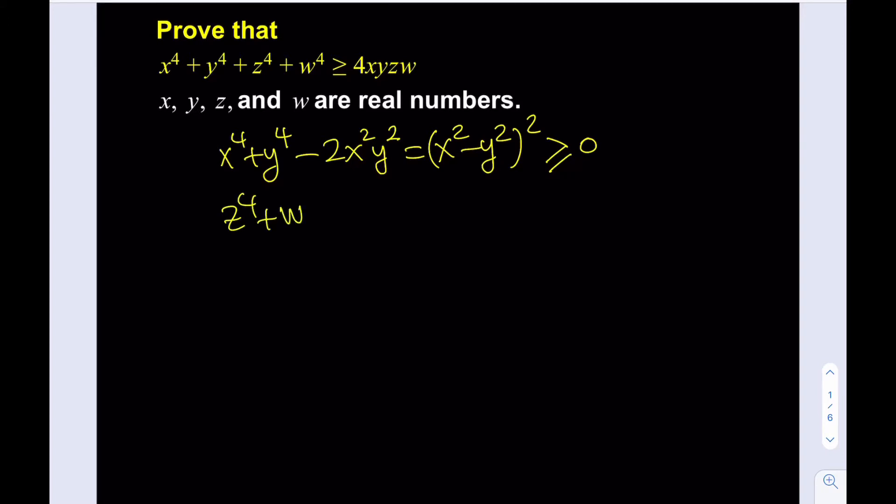z to the fourth, w to the fourth minus 2z squared w squared is equal to z squared minus w squared squared, which is greater or equal to zero. Since these are perfect squares, they're going to be non-negative if x, y, z, w are real numbers.